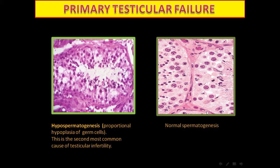Normal spermatogenesis: when we see normal spermatogenesis in a testicular biopsy it means obstructive azoospermia. We see spermatogonia, primary spermatocytes, spermatids, and spermatozoa. To repeat: when you see normal spermatogenesis in a testicular biopsy, it means obstructive azoospermia.